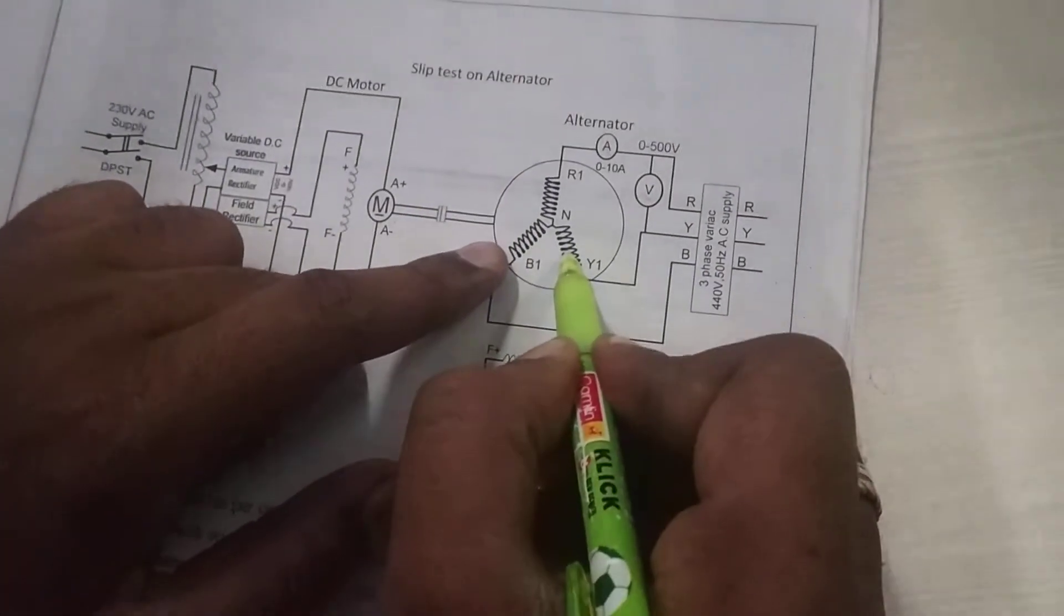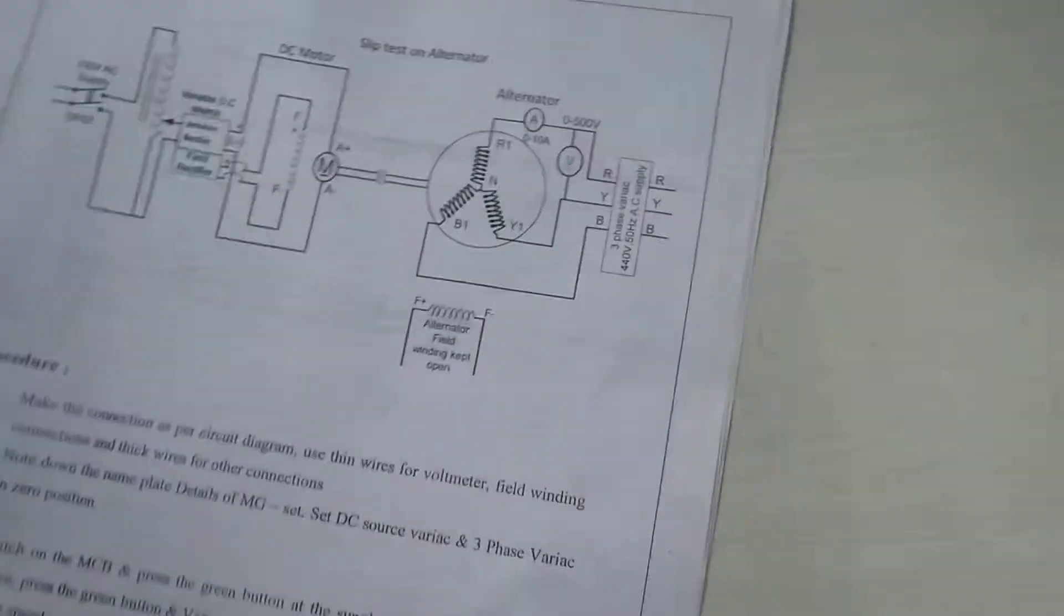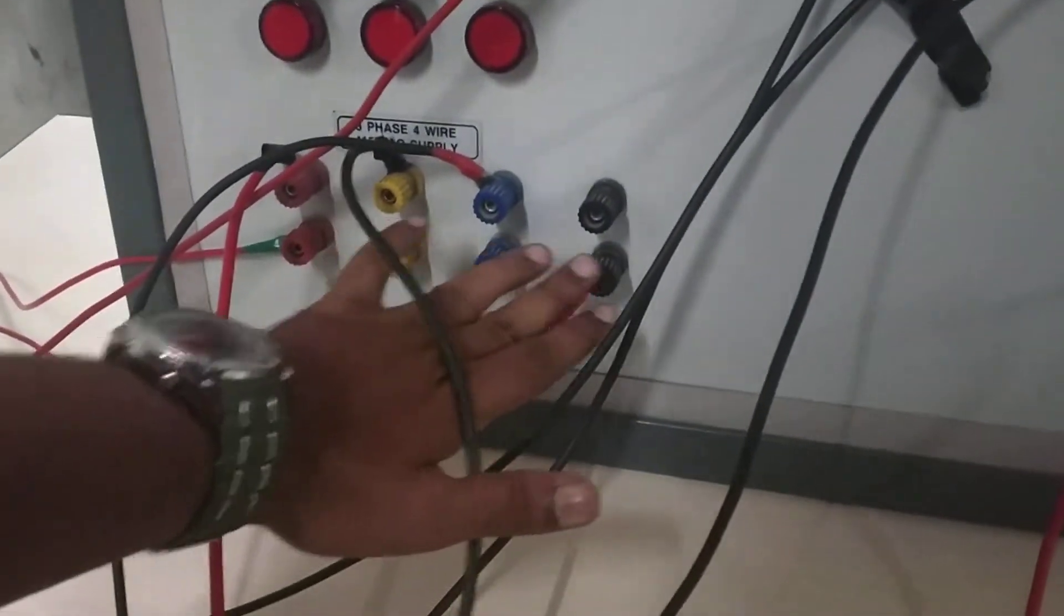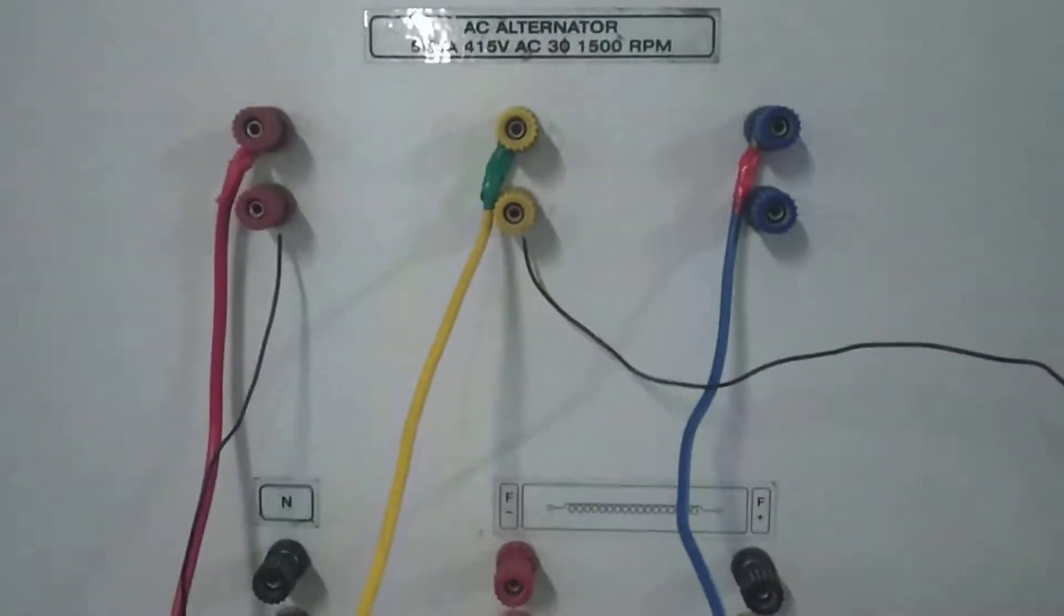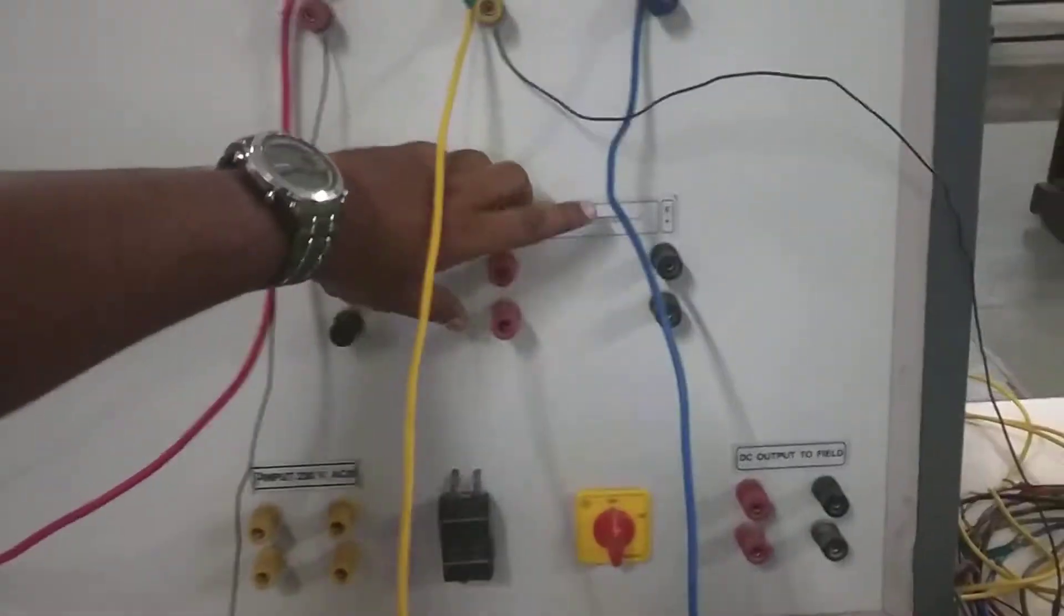Supply is given to the alternator through a three-phase variable supply. The input to this three-phase variable supply is given from R, Y, B, and neutral. Then the output is given from yellow to yellow, blue to blue, and only for the red phase the ammeter is connected across it. Field winding of this alternator is kept open.